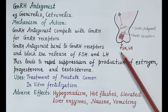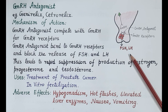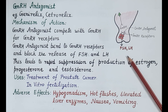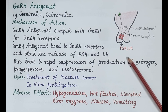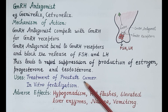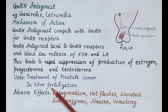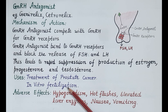Reduced secretion of FSH decreases estrogen secretion by the ovaries, and reduced secretion of LH decreases progesterone from the ovaries and testosterone from the testes. GNRH antagonists are therefore similar in action to continuously administered GNRH agonists. Their main uses include treatment of prostate cancer caused by elevated testosterone levels, and in controlled ovarian stimulation for in vitro fertilization.